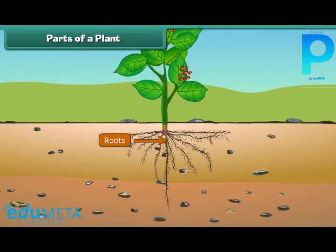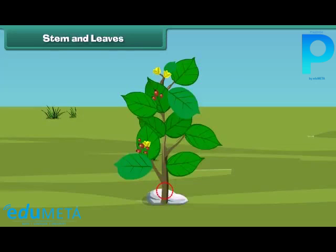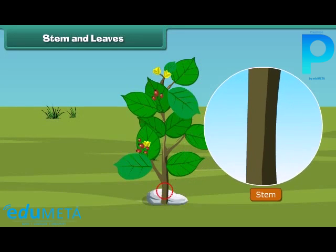Roots are the lower part of a plant. They grow in soil and help the plants to get water and minerals from the soil. The next part of the plant is a stem. A stem is the hard part of the plant which grows above the ground. It bears leaves, fruits, and flowers. A stem also supports plants.